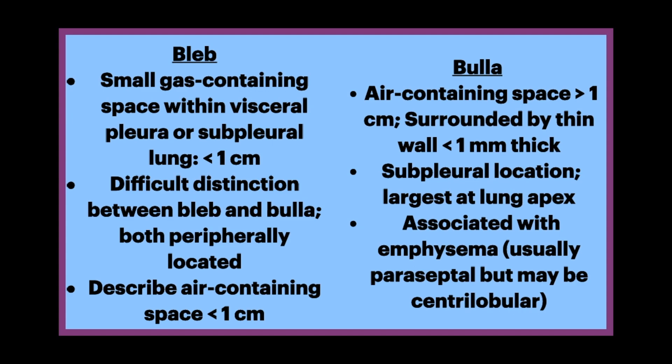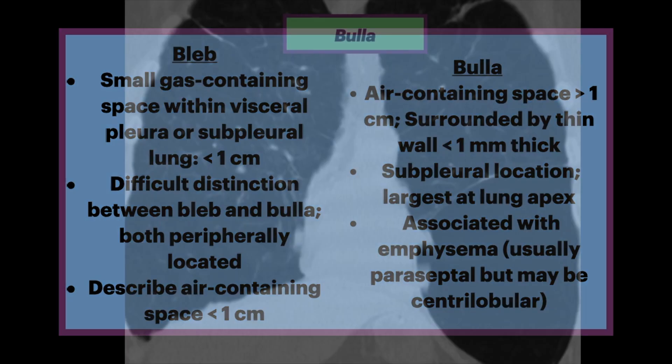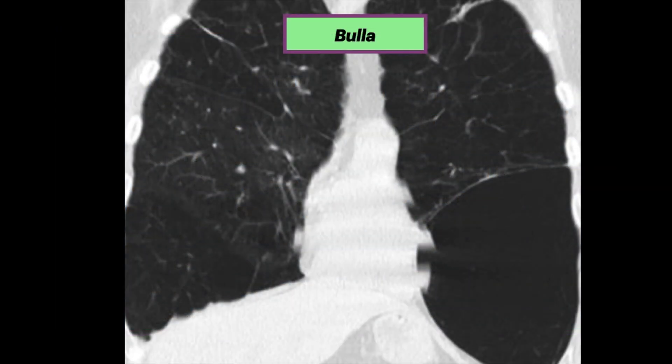We'll talk about bullous emphysema in another video. For example, this coronal chest CT shows a large bullae in the left lower lung zone.